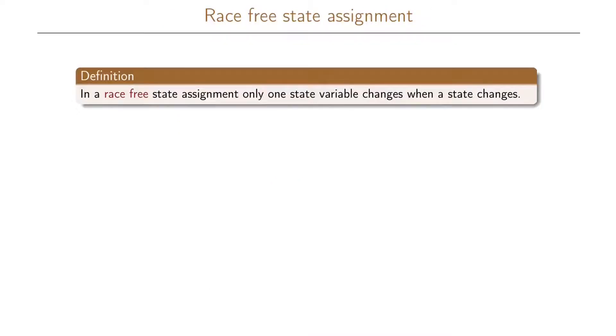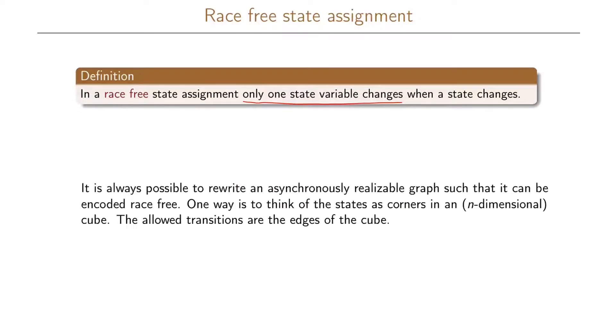We define a race-free state assignment as a state assignment where only one state variable changes when the state changes. And we can note that if we have an asynchronously realizable graph then it is always possible to rewrite this graph such that it can be encoded race-free.